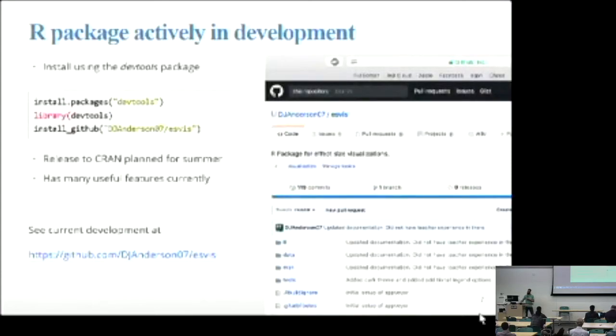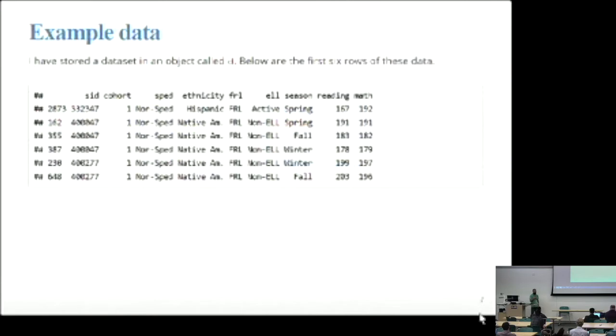For the rest of this talk now, I'm going to be talking about the implementation of some of these ideas through the ESViz package, which I've been working on. It's on GitHub. I'm hoping to release to CRAN this summer, but we'll see. I'm going to illustrate some of the functionality of the package using these example data. This is a pretty typical data set from education, where you have student ID, multiple cohorts of students, whether they're special education or not, what their race ethnicity is, and whether they were eligible for free or reduced price lunch. ELL is whether they were an English language learner or not. The season that test was given in, and then we have reading and math scores.